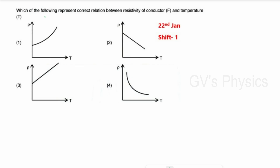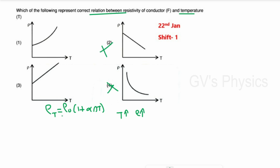Fourth question: Which graph correctly shows the relation between resistivity of a conductor and temperature? The relation is ρ(T) = ρ₀(1 + αΔT), showing resistivity increases with temperature but not linearly. Options 2 and 4 are not possible; the correct graph is option 1, which shows a non-linear increase.